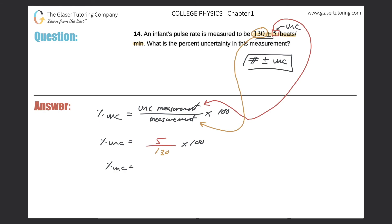So just take out your calculator. 5 divided by 130, multiply that by 100, and that should come out to a value of approximately 3.85 percent.